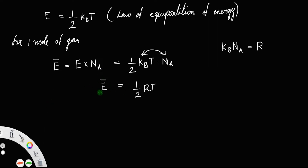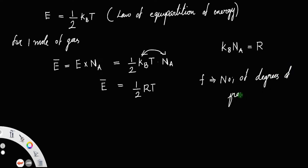Suppose this gas molecule has f degrees of freedom, where f equals the number of degrees of freedom. This energy (1/2 RT) is actually associated with one degree of freedom.